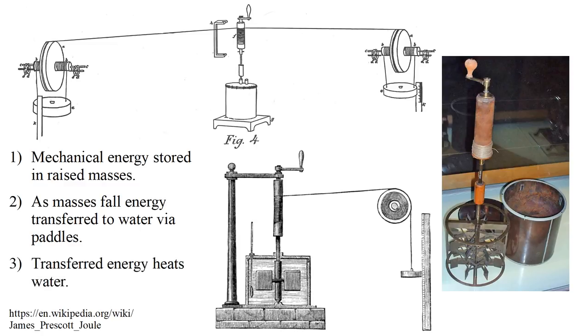The transferred energy heats the water. A thermometer measures the temperature increase. Joule knew the heat capacity of the water plus the copper chamber mechanism, so he could convert the temperature increase into the number of calories of added heat. Comparing this number of calories to the known mechanical energy stored in the weights, he was able to determine the mechanical energy equivalent of heat energy. The modern value is, one calorie of heat is equivalent to 4.184 joules of energy.